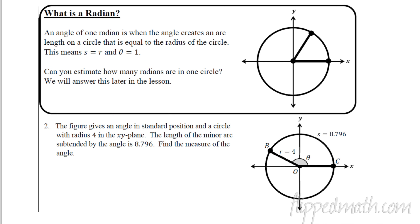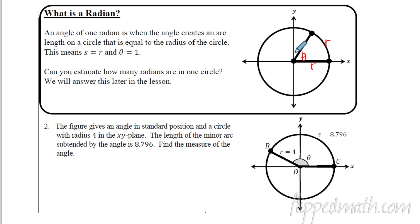An angle of one radian is when the angle creates an arc that is equal to one radius. One radian is the angle required to have an arc length equal to the radius. If I measure off that same distance along the arc — so both the radius and the arc length are the same — then theta equals one radian. One degree is tiny by comparison, but we have to start thinking in radians. So: one radian is the angle that creates an arc length equal to the radius. Can you estimate how many radians are in one full circle?